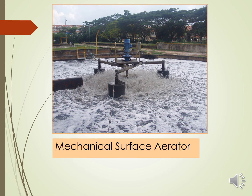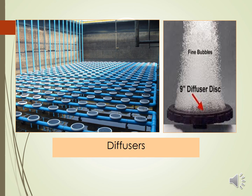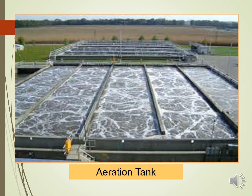This photo shows a mechanical surface aerator floating on the surface and mixing the wastewater. This photo shows diffusers placed at the bottom of the tank, producing very fine air bubbles. These fine bubbles increase the contact between air and water, providing more oxygen to the wastewater. This other photo shows the aeration tank from the top.